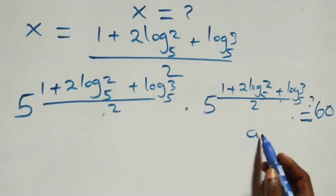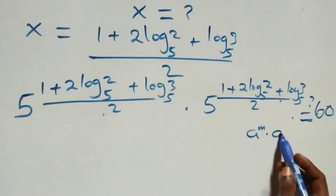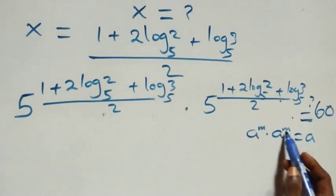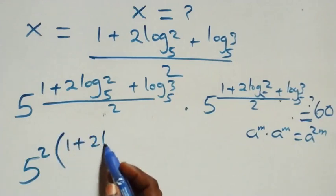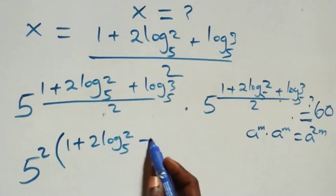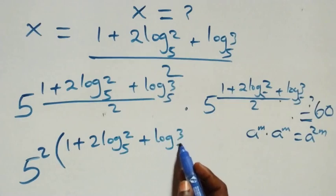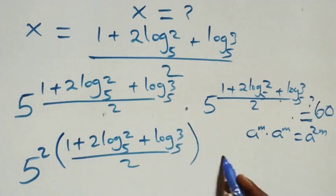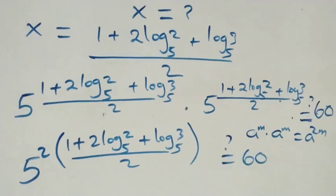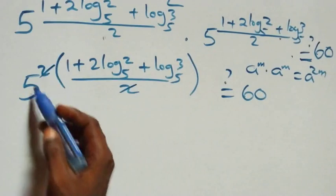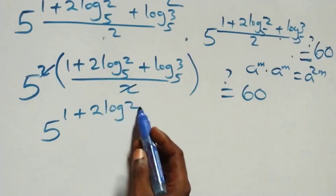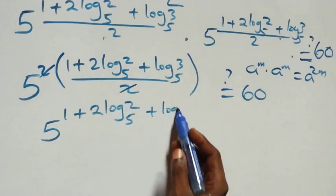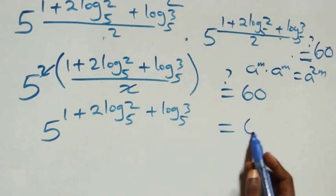Since we have the same base multiplying — a raised to power m times a raised to power m equals a raised to power 2m — we can write this as 5 raised to power 2 times (1 plus 2 log₅2 plus log₅3) all over 2. The 2 in the numerator and denominator cancel, leaving 5 raised to power (1 plus 2 log₅2 plus log₅3). Is this equal to 60?